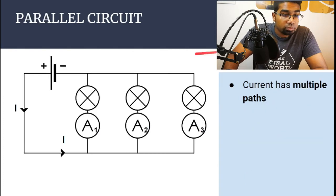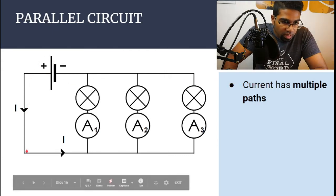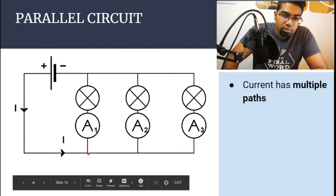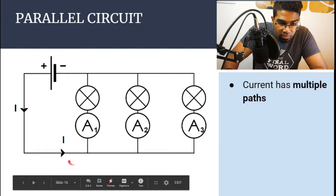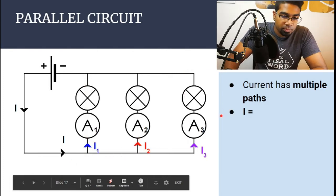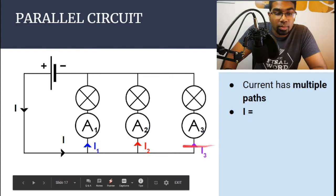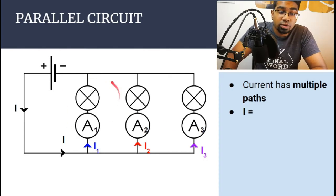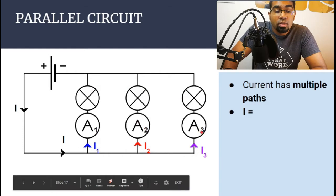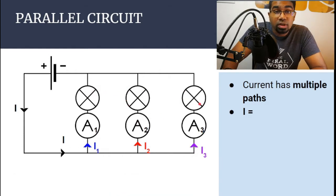This is different in a parallel circuit. The current has multiple paths. Starting from the positive terminal, the full current I arrives at a junction where it splits — some goes through one path, some through another, some through a third. The current would not necessarily be divided equally; the division depends on the resistance in each path. If all bulbs have the same resistance, the current divides equally; otherwise, you need to use Ohm's law (V = IR) to calculate the current along each path.